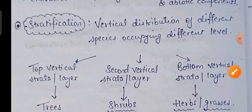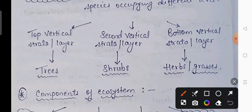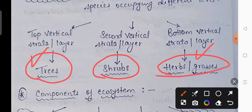Now the term is stratification. Basically it is the vertical distribution of different species occupying different levels. For example, the topmost layer mein aate hain trees. The second vertical strata mein aate hain shrubs. Aur last mein hamare paas bottom level wale, jiska example hai herbs ya phir grasses. So basically this is an example of stratification.